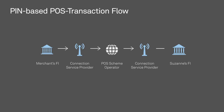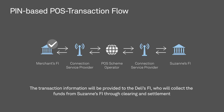On behalf of Interac, a connection service provider routes the payment request to Suzanne's FI. Suzanne further authenticates herself by entering her PIN, and also enters additional details of the transaction — for example, whether to pay from her checking or savings account — and authorizes the transaction. Suzanne's FI approves or declines the payment request and, via a connection service provider, sends this information to Interac, which sends an approved or declined message back to the POS device at the deli so that Suzanne and the counter clerk know the outcome. The transaction information generated by the deli's POS device will be provided to the deli's FI, who will use it to reconcile the payment and collect the funds from Suzanne's FI through clearing and settlement.